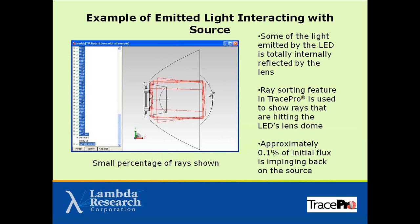One problem that can occur with file sources: if you have light that could interact with the body of an LED or other source object, the file source has no material or surface properties, so there's nothing for reflected light to interact with. Using ray sorting in TracePro, you can see a small percentage of rays hitting the LED dome — about a tenth of a percent of initial flux impinging back on the source. If that number is larger, you may have to model the source as a three-dimensional solid instead.